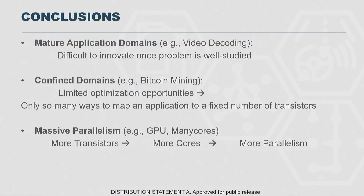So what are the conclusions? First, mature application domains are very difficult to continue to specialize over and over again. We've had a lot of time building video codecs and video decoders, and it's very difficult to keep innovating in a well-studied space. Second, if you have a confined domain like SHA-256 hashing for Bitcoin, there are only so many ways to map that into a restricted set of transistors, so specialization is not going to be the savior from the end of transistor scaling. Last, massive parallelism has traditionally been a solution — more transistors gave us more cores and more parallelism — but now with no more transistors, we get no more cores and no more parallelism. Much to my own sorrow, having done a lot of work in the many-core processor space, parallelism may not be the answer moving forward.